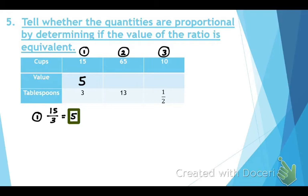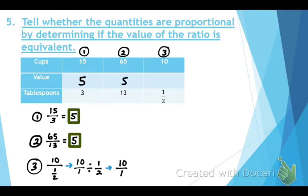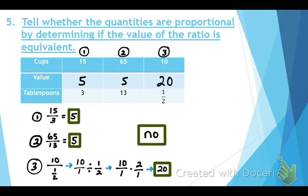For the second column, divide 65 by 13, which also equals 5. The first two match. For the third column, divide 10 by one-half. Rewrite as 10 over one divided by one-half, use KFC, and the value is 20. Since the first two equal 5 but the last equals 20, the entire table is not proportional.